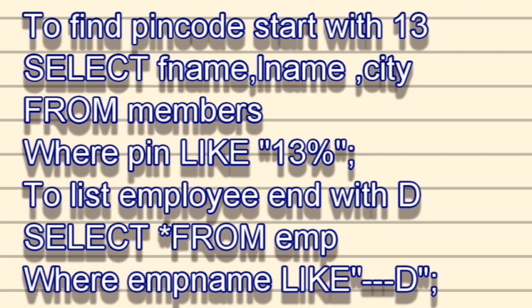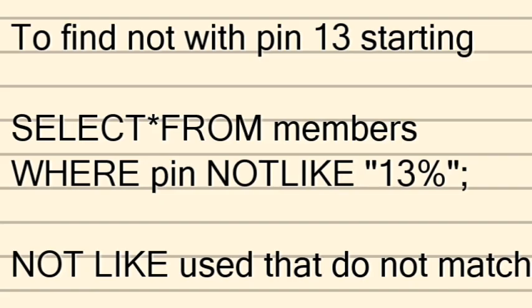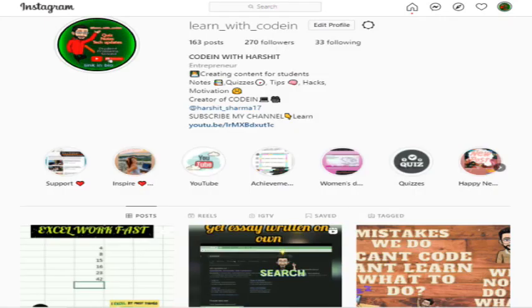A second LIKE example: list all employees who have a four-letter first name ending with 'd'. The query is: SELECT * FROM employee WHERE employee_name LIKE '___d' — three underscores and then 'd', meaning four total characters ending in 'd'. If you want the opposite — rows that do NOT match the pattern — you use NOT LIKE. For instance, if the pin code does not start with '13', use NOT LIKE '13%'. NOT LIKE selects rows that do not match the specified pattern.